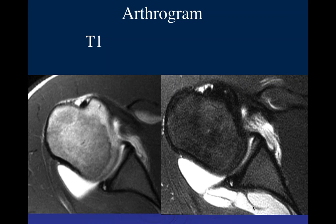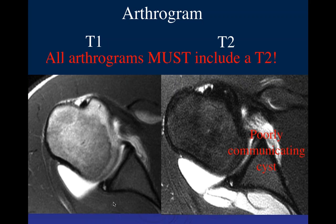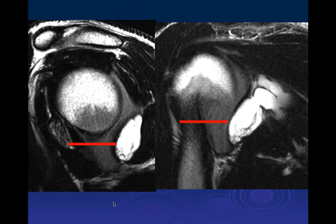Very frequently at the time of the arthrogram, right after injecting the agent, these paralabral cysts will not communicate aggressively with the joint space. You may not see them until you look at fluid-sensitive images. A number of years ago I saw cases where people would put contrast in the joint space and just do T1 and T1 fat-sat images without fluid-sensitive images, and a couple of these cysts were missed. It's important to do a complete study and not take shortcuts.